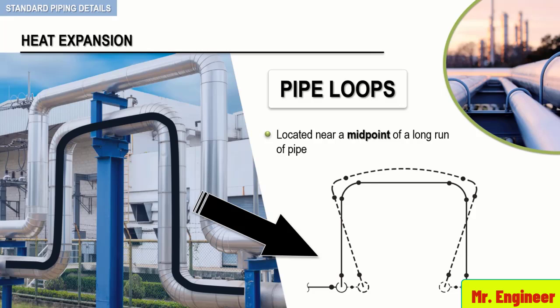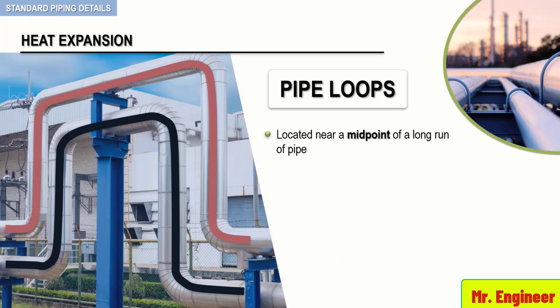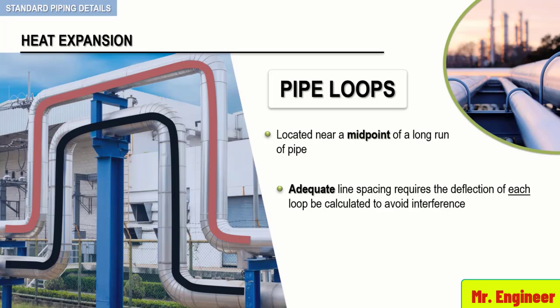When multiple loops are located at the same location, adequate line spacing requires the deflection of each loop be calculated to avoid interference. We will see this in detail further ahead.